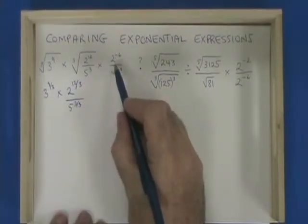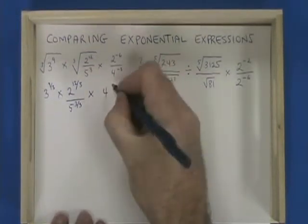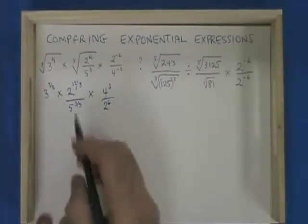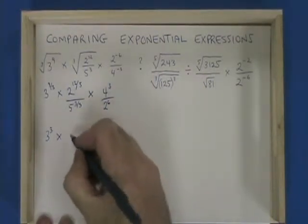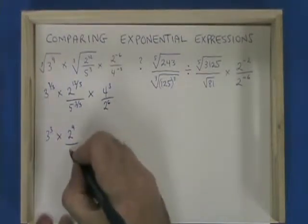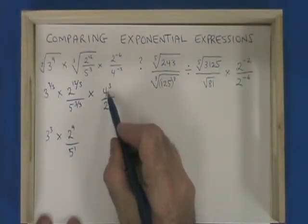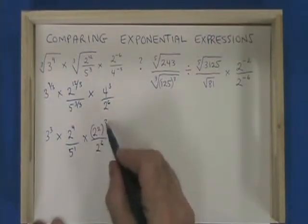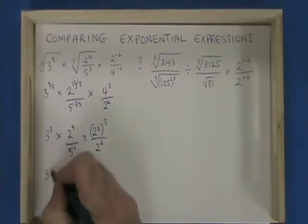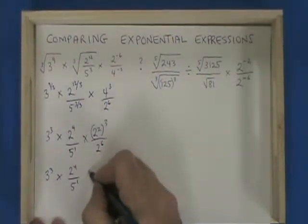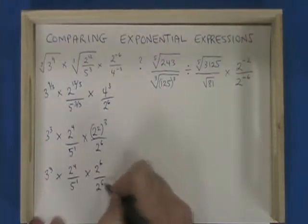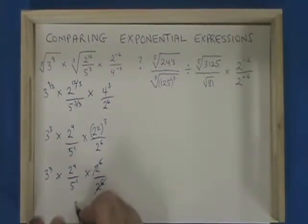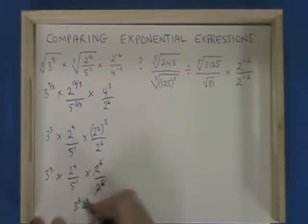This one has negative exponents, so I'm going to invert the fraction, giving me times 4 cubed over 2 to the 6. Simplifying further, 3 to the 9 thirds equals 3 cubed, 2 to the 12 thirds equals 2 to the 4, and 5 to the 3 thirds equals 5 to the power of 1. I'm going to convert 4 into 2 squared, and then applying this power of 3 to the contents of the bracket, I end up with 2 to the 6 over 2 to the 6. The 2 to the 6s cancel, and my final answer is 3 cubed times 2 to the power of 4 over 5.